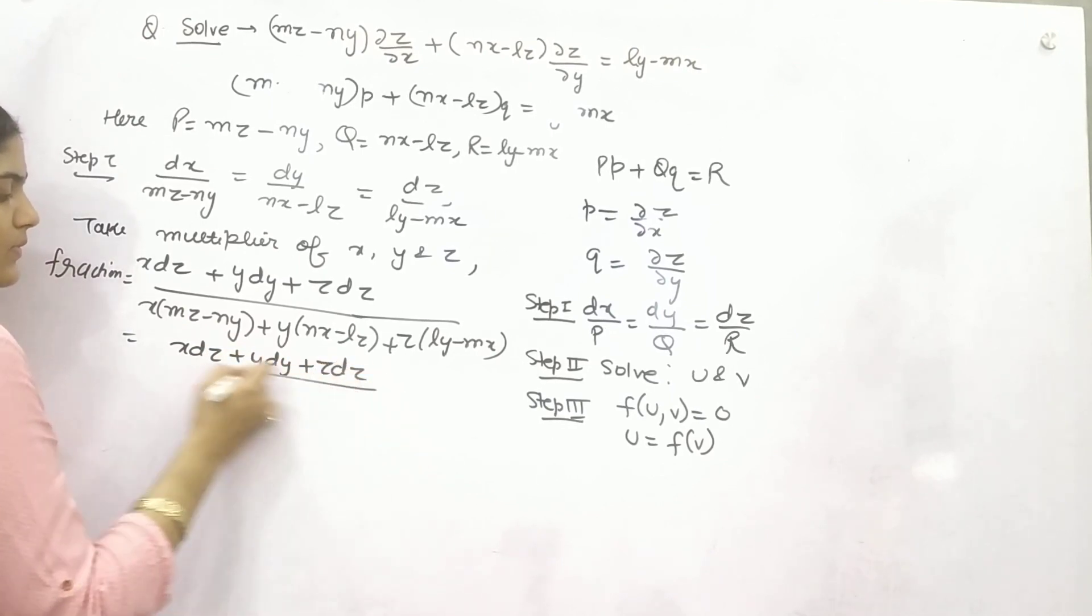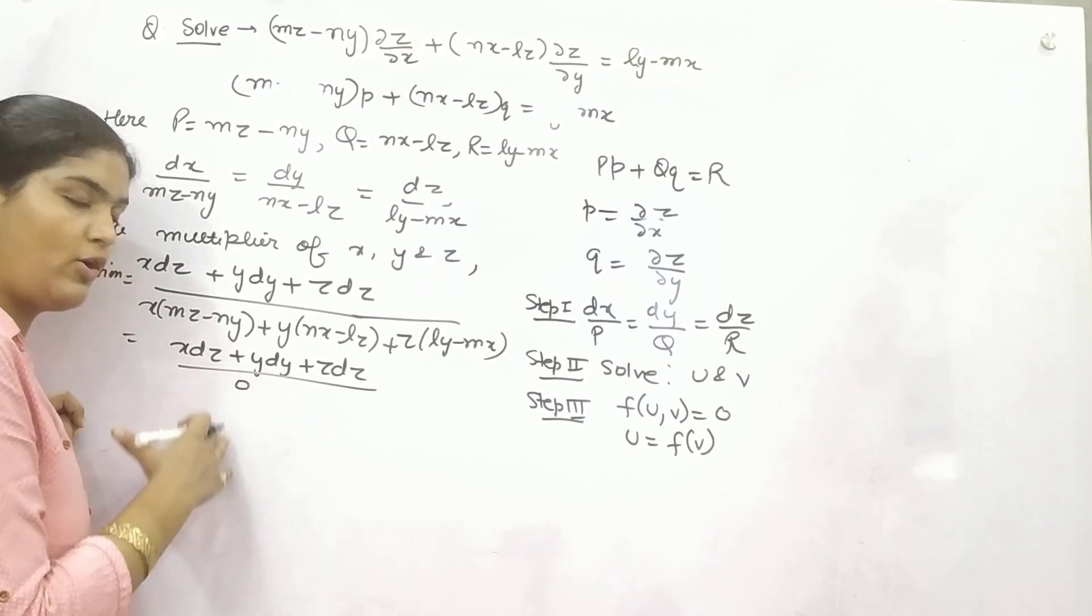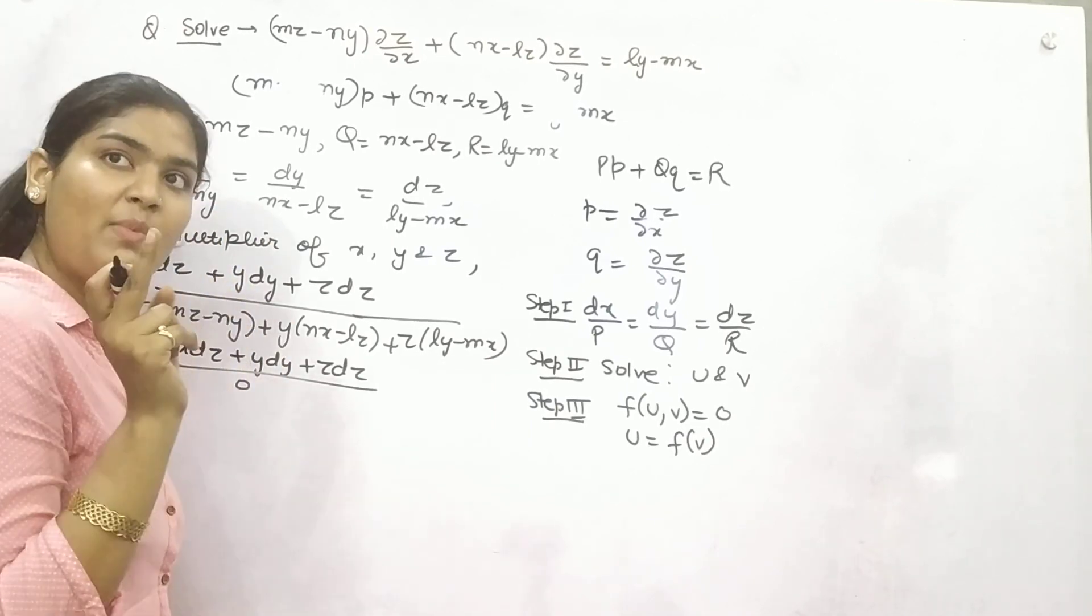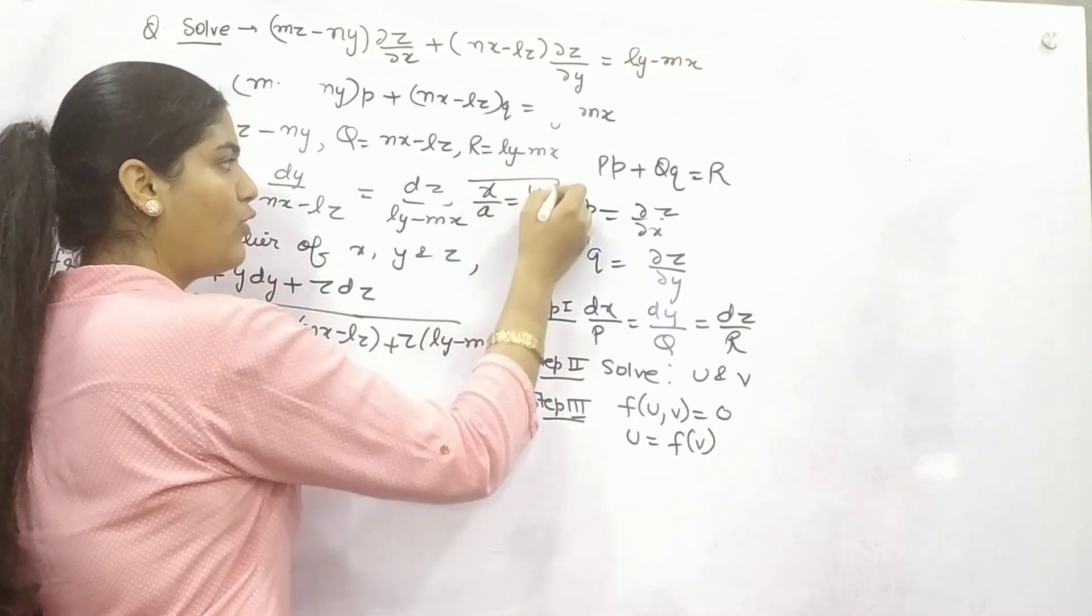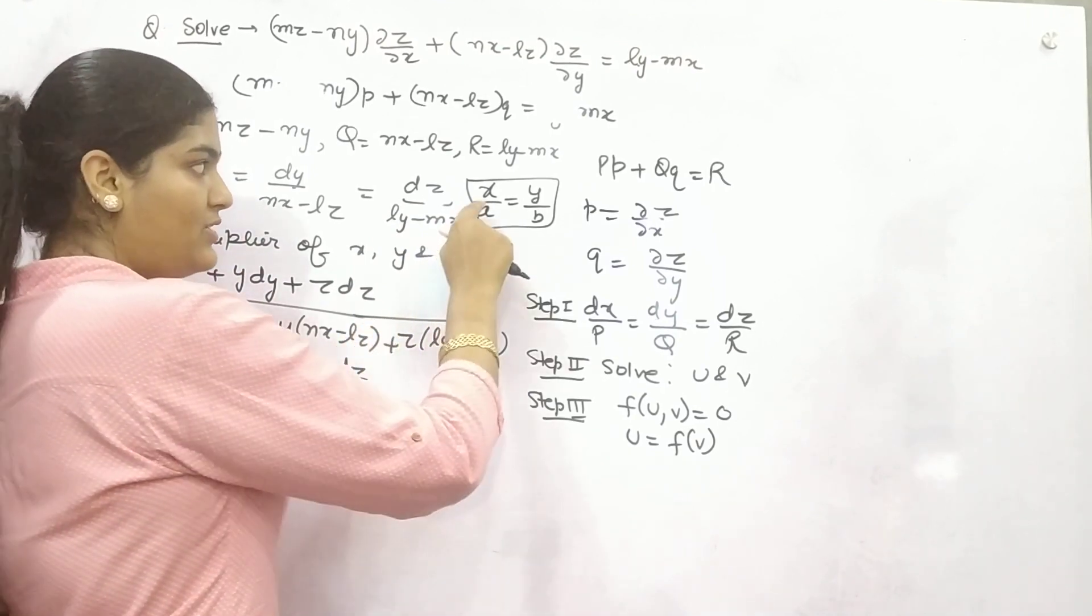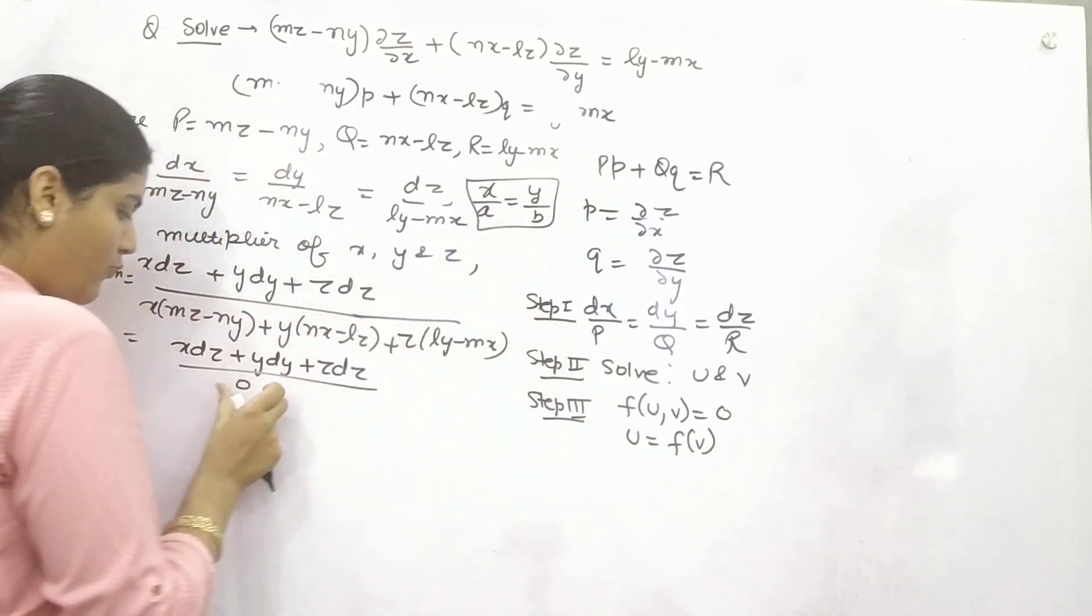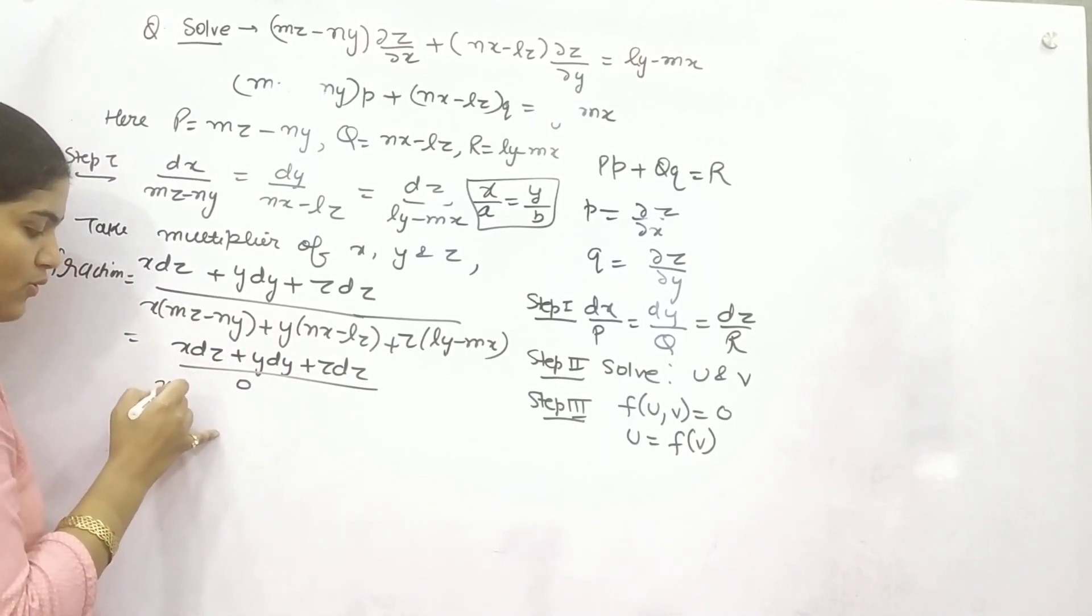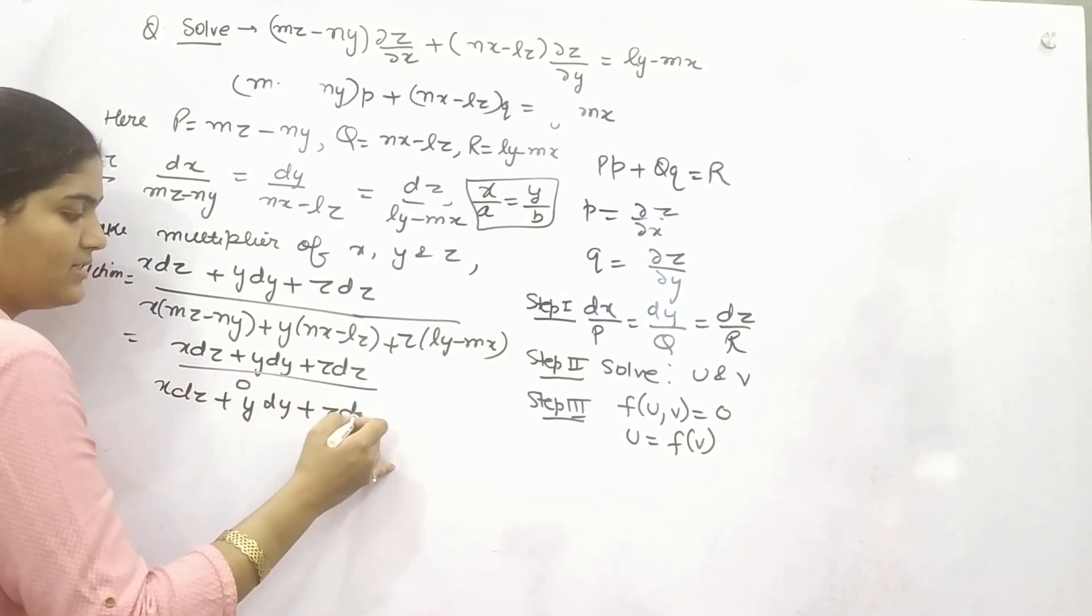Now don't consider it that because we get 0 in the denominator, we cannot solve it further. It's not that. Do you remember if we have something like X/A = Y/B and we want to find direction ratios, we just put X = A and Y = B? Similarly, what you need to do? Because this is a fraction, this will create X·dx + Y·dy + Z·dz = 0.